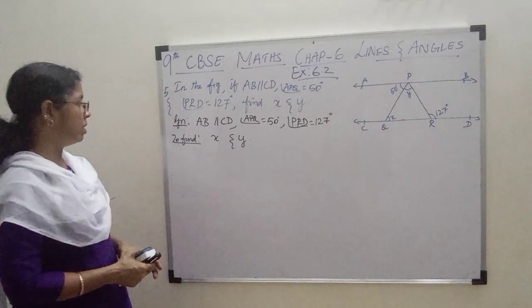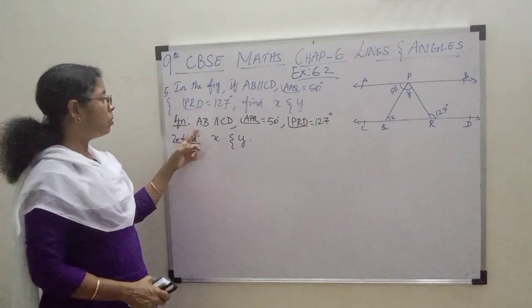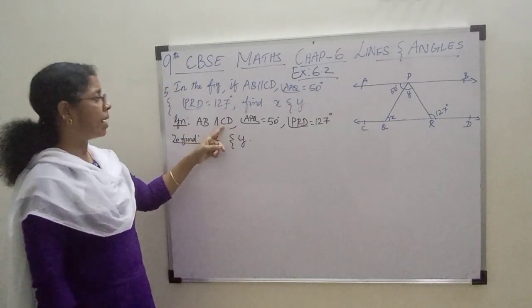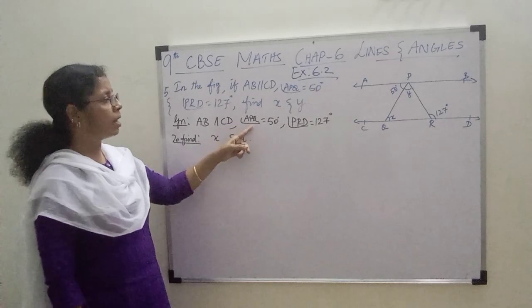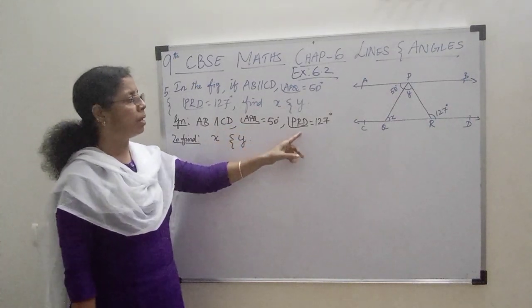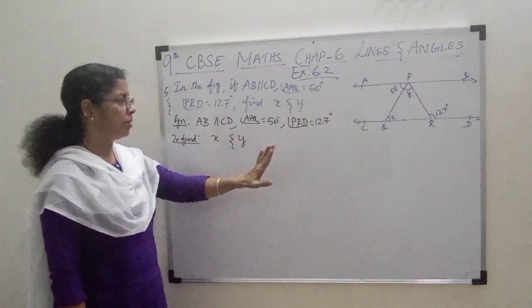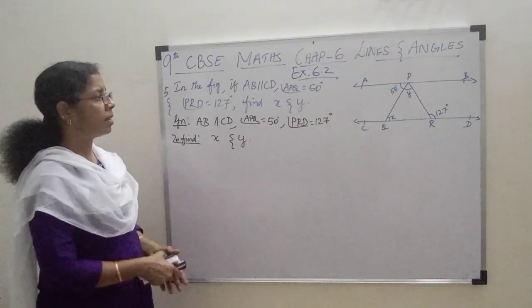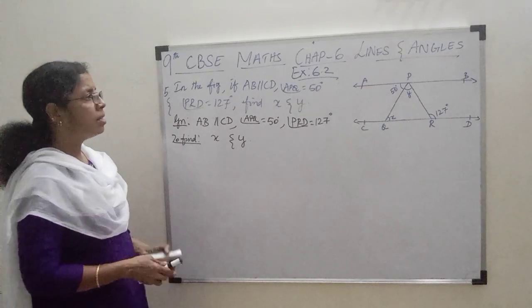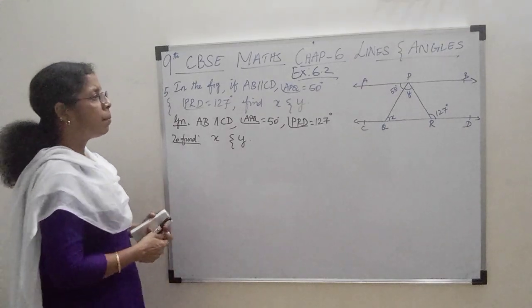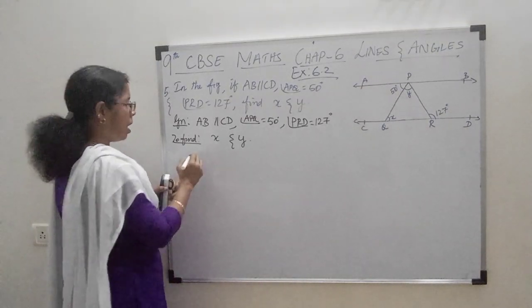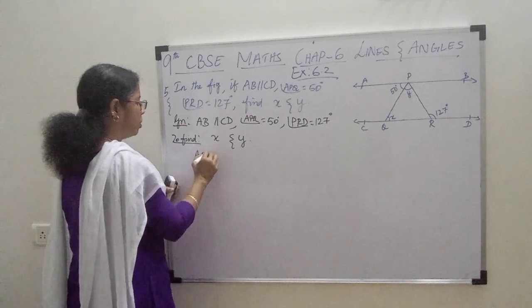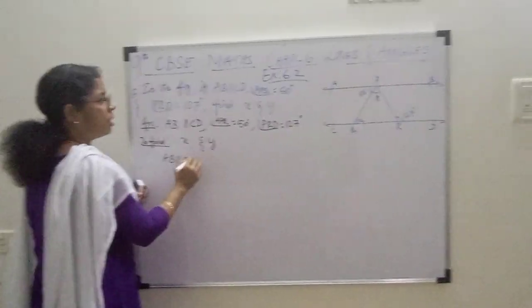Let's see how to find out this. These are the things given to you: AB is parallel to CD, angle APQ is 50, angle PRD is 127. You are supposed to find out X and Y. AB is parallel to CD.